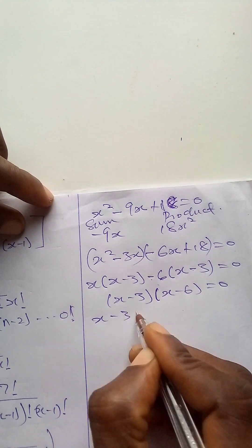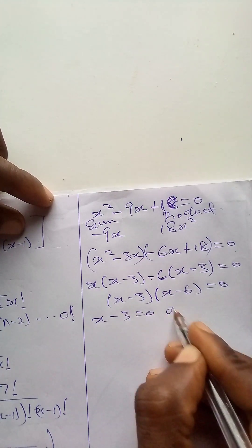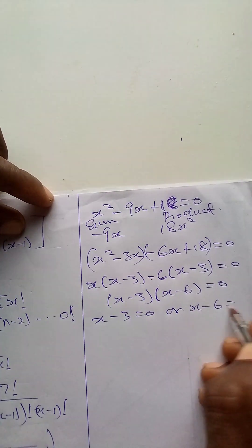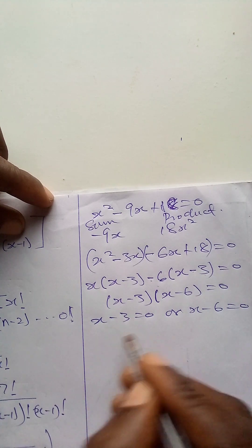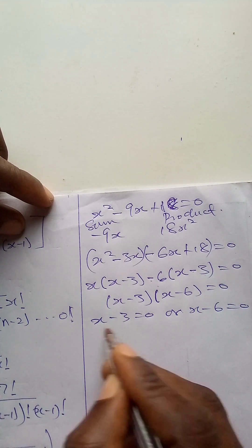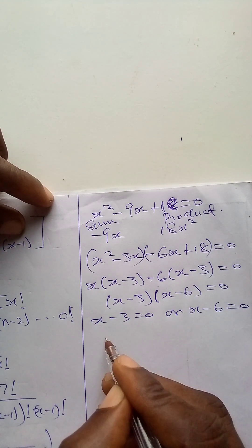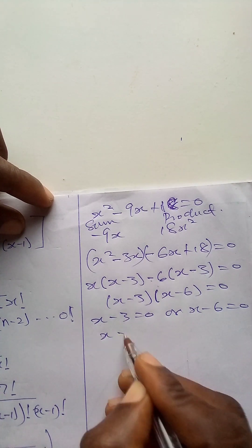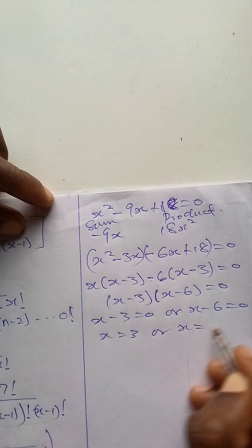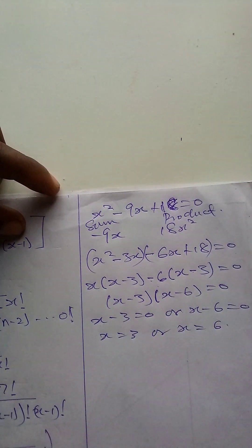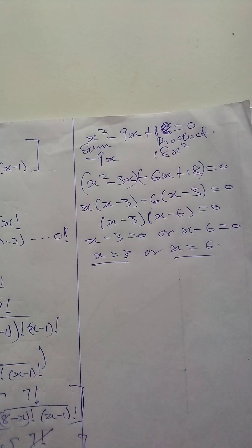So x minus 3 equals 0 or x minus 6 equals 0, giving x equal to 3 or x equal to 6. Please like this video, share and subscribe.